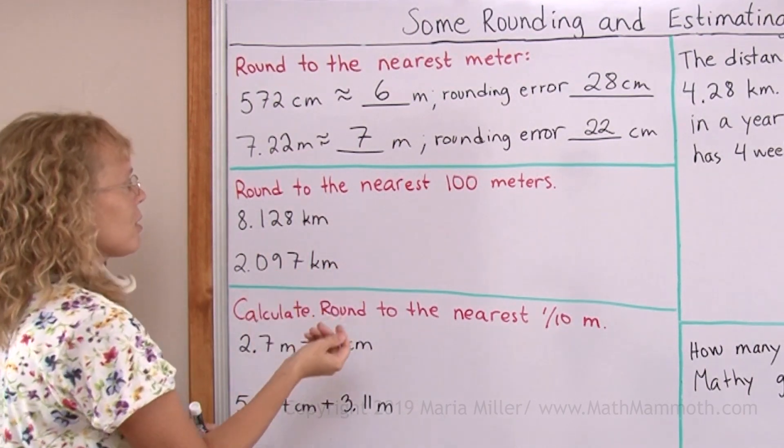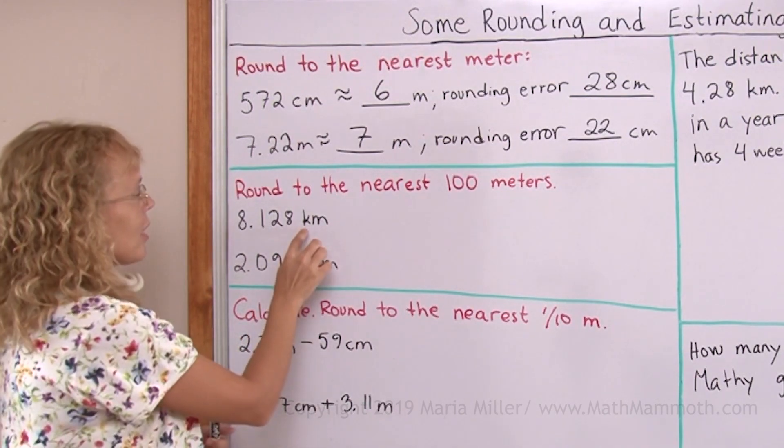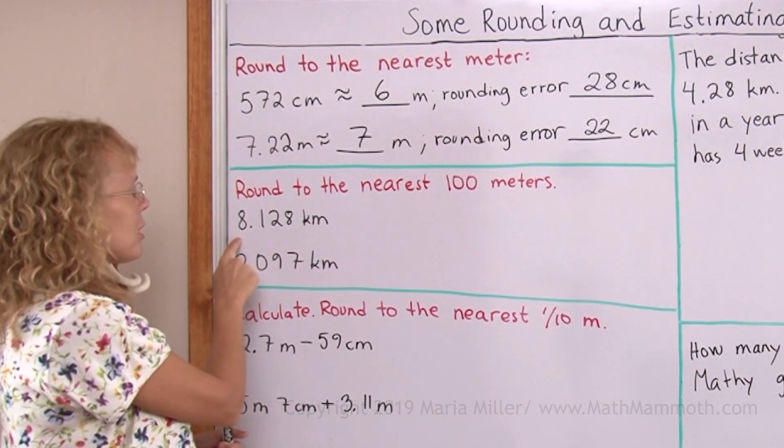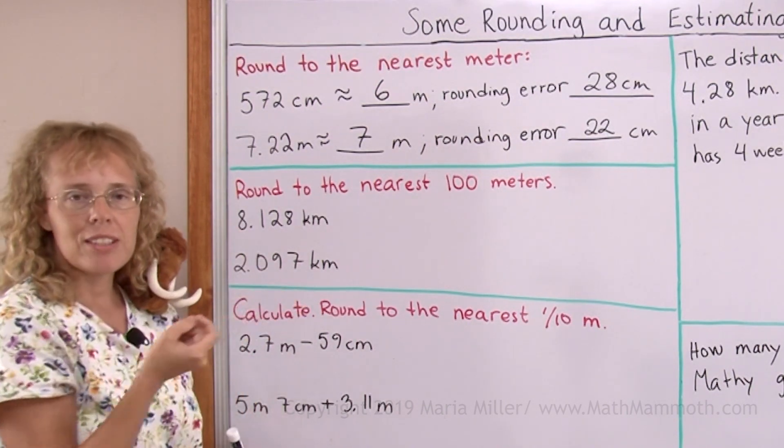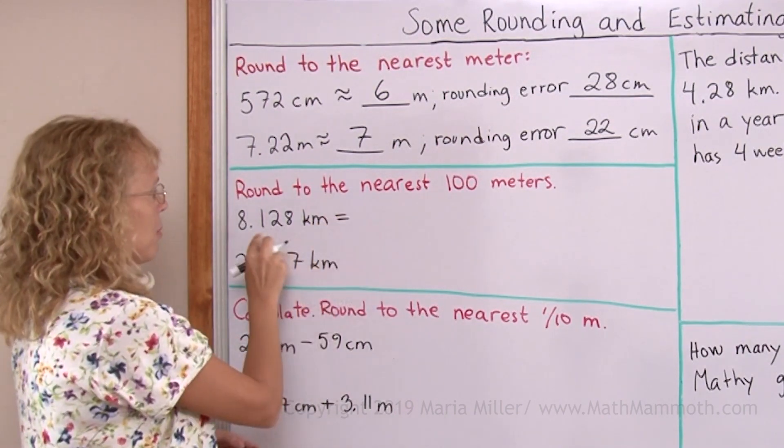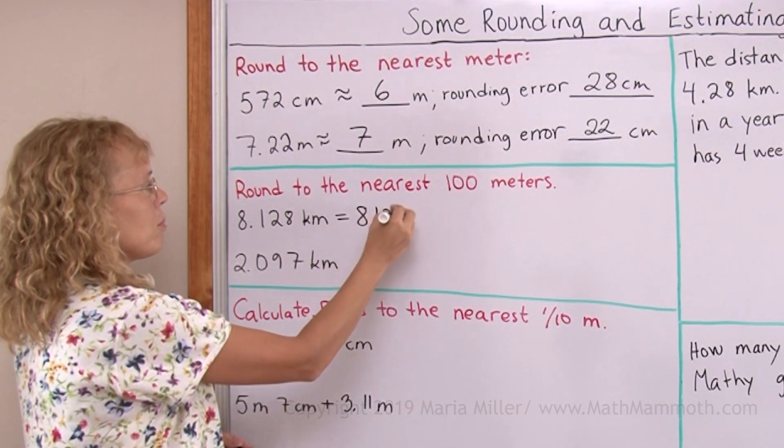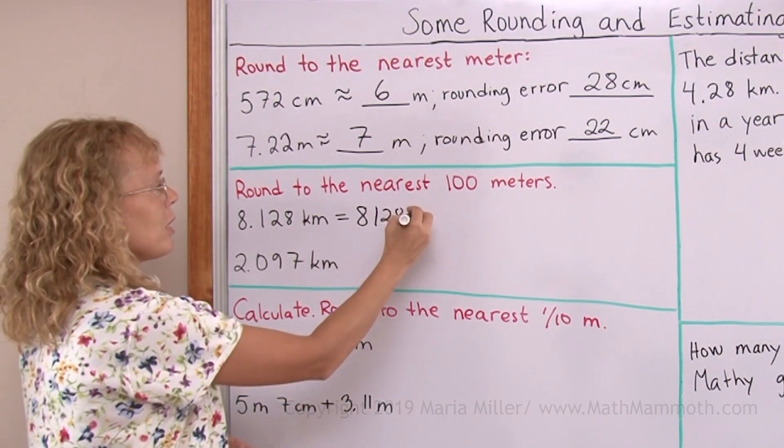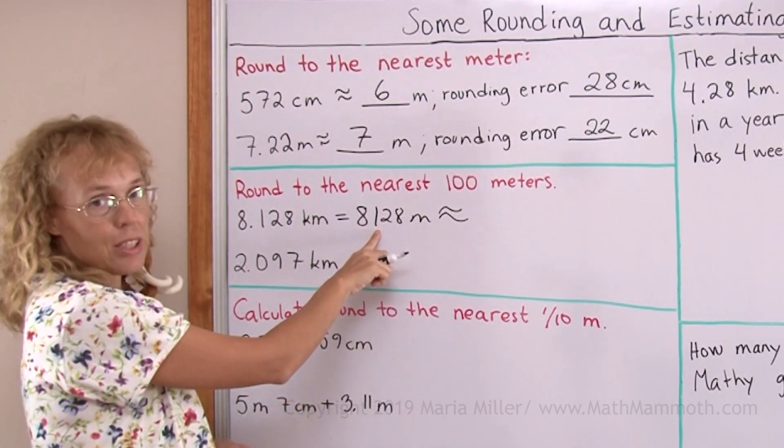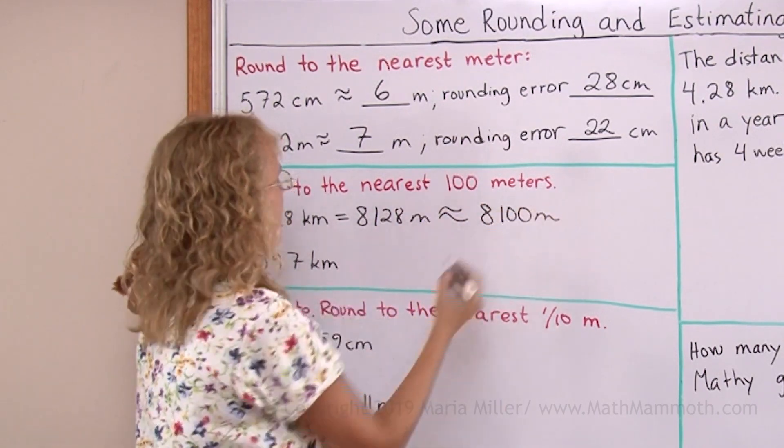Round to the nearest hundred meters. I am going to change this into meters first, remembering that kilo means thousand. So if I had eight kilometers, I would have exactly 8,000 meters. But these digits just follow my digit of the thousands here. So it becomes 8,128 meters. Now I'll round it to the nearest hundred meters or to the nearest hundred here. So 8,100.